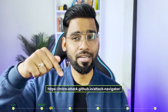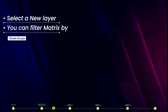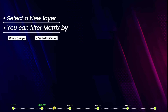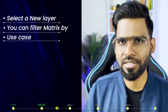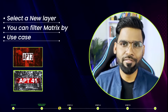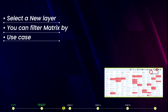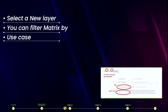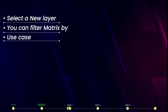Simply visit the website, select a new layer, and you can filter the matrix by threat group, affected software, techniques, and campaigns. For example, if APT 3 and APT 41 are the major threats for your organization — based on your risk assessment — create two matrices with risk scores one and two respectively, then create a third layer to see the common techniques used by both groups.